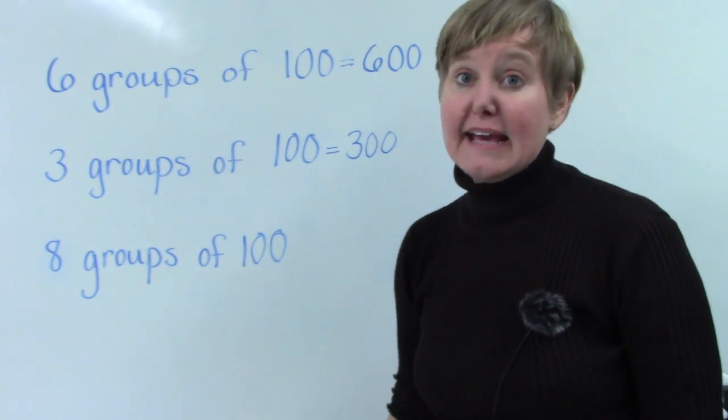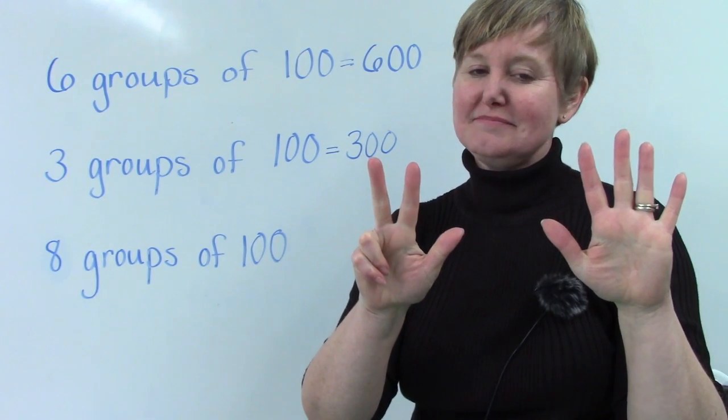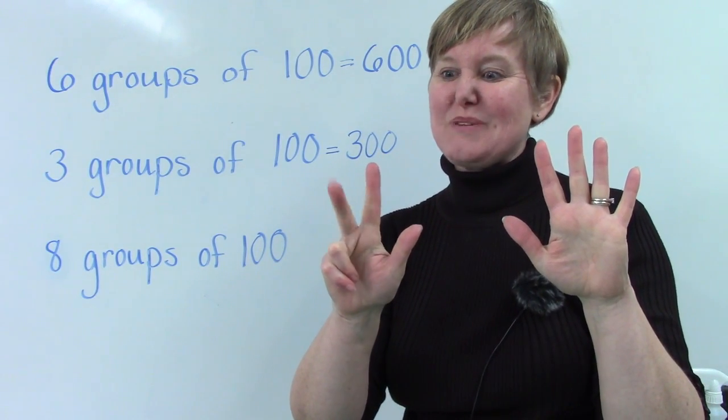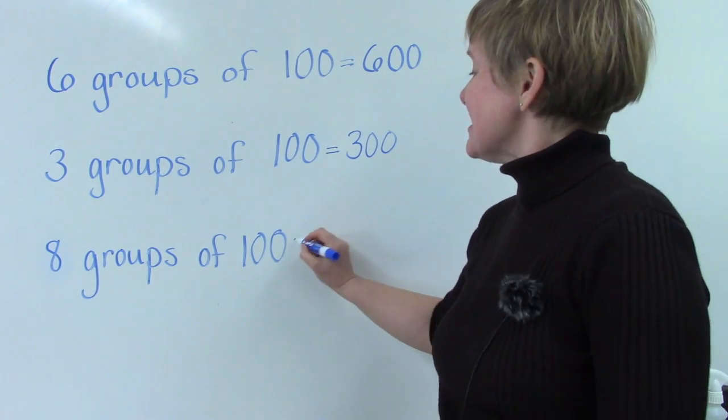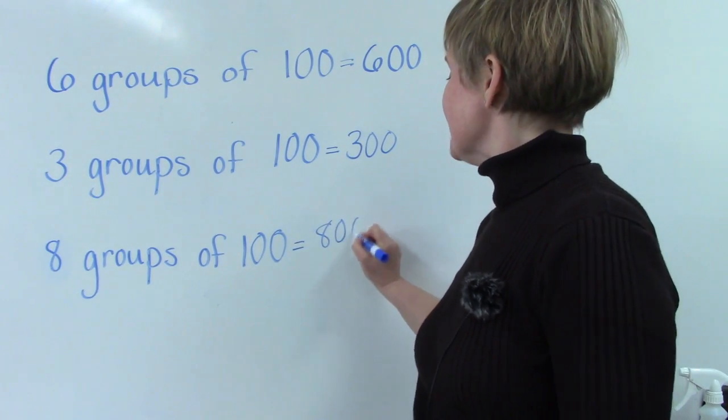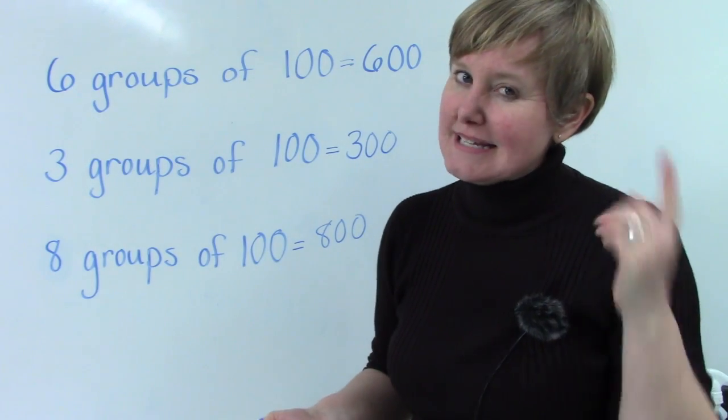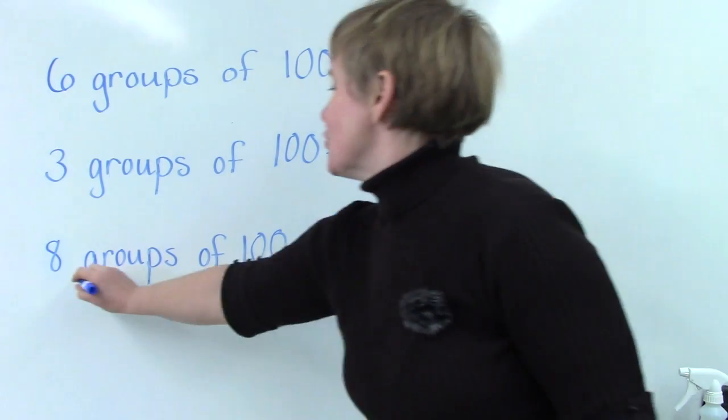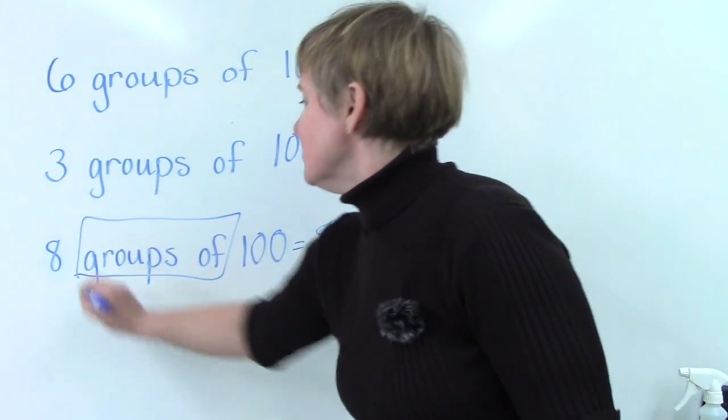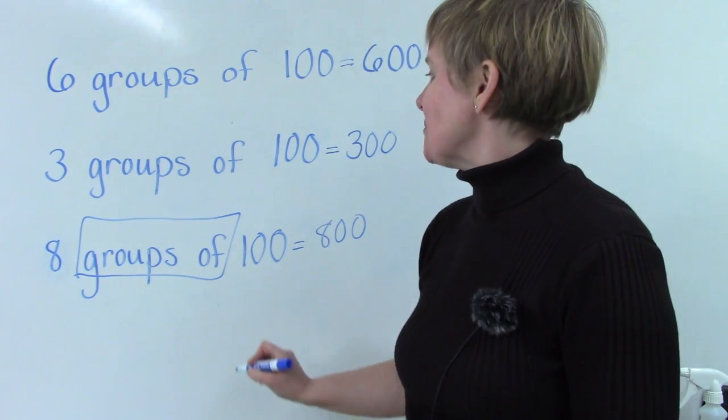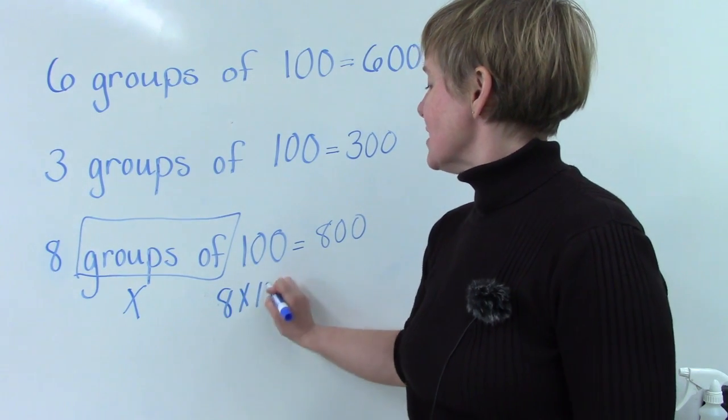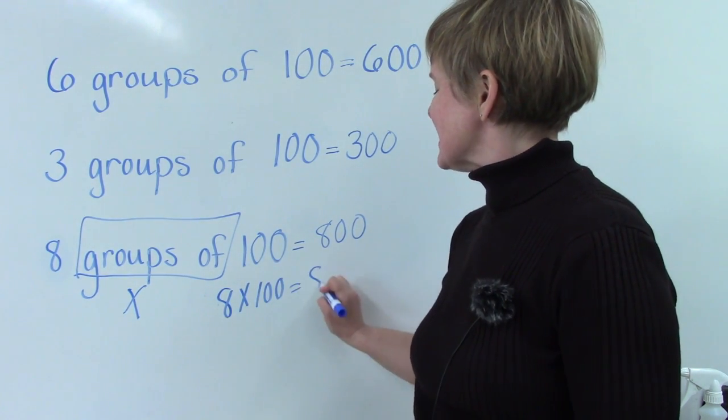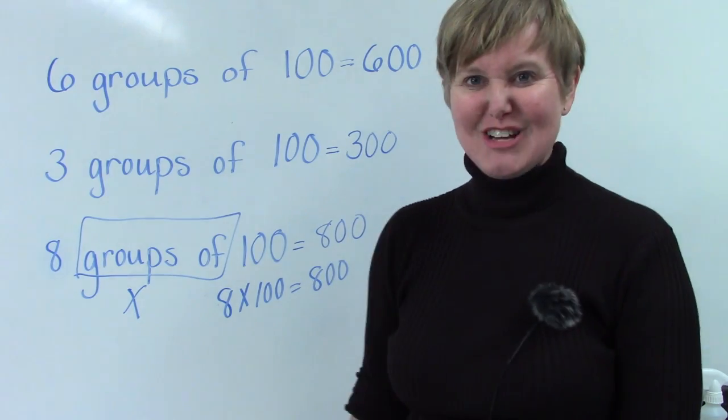What about eight groups of one hundred? Can you tell me what it is without even counting them out? Eight groups of one hundred is eight hundred. And we still remember that the phrase groups of can be replaced with an x. So we can say eight groups of one hundred equals eight hundred.